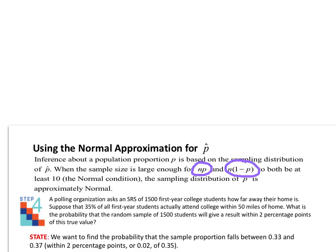Here's a problem from your notes: A polling organization asks a simple random sample of 1,500 first-year college students how far away their home is from campus. Suppose 35% of all first-year students attend college within 50 miles of home. What is the probability that a simple random sample of 1,500 students gives a result within 2 percentage points of this true value — meaning between 33% and 37%?